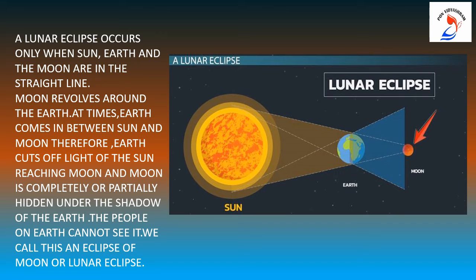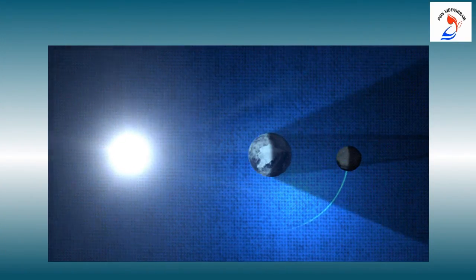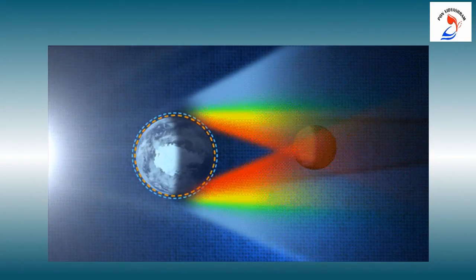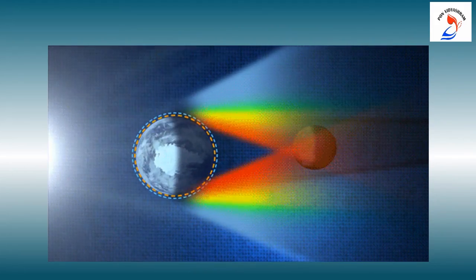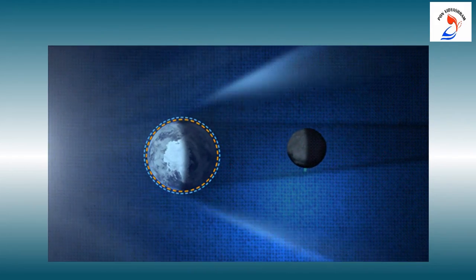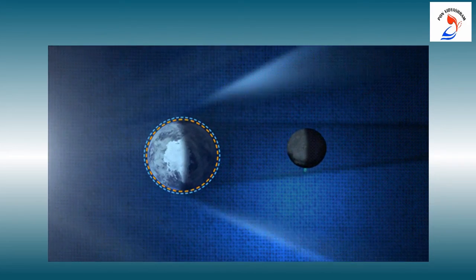So, the people on earth cannot see it. We call this an eclipse of the moon, or lunar eclipse. Children, observe the picture — you can see the sun, earth and moon in a straight line. Here you can see what happens when the moon is revolving around the earth and the earth comes between the sun and the moon. The light is being blocked and the earth's shadow falls on the moon, so that people are not able to see the moon. This is called a lunar eclipse.